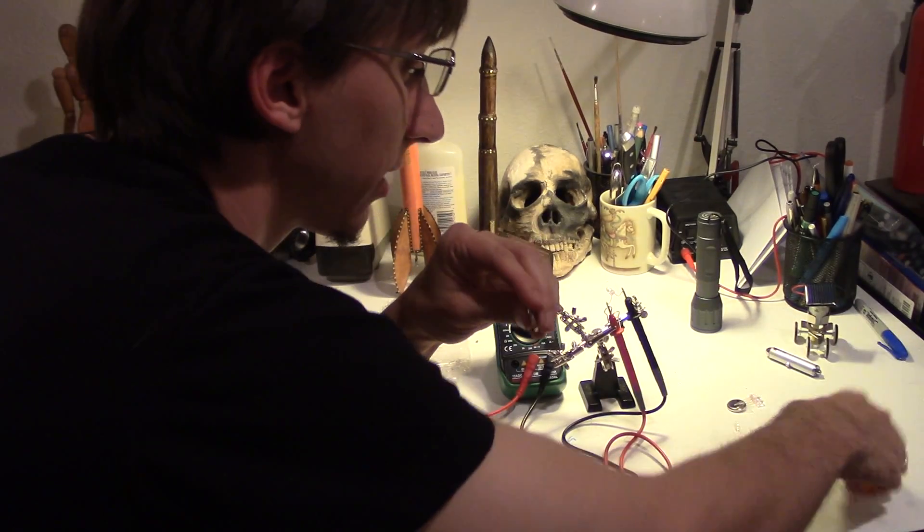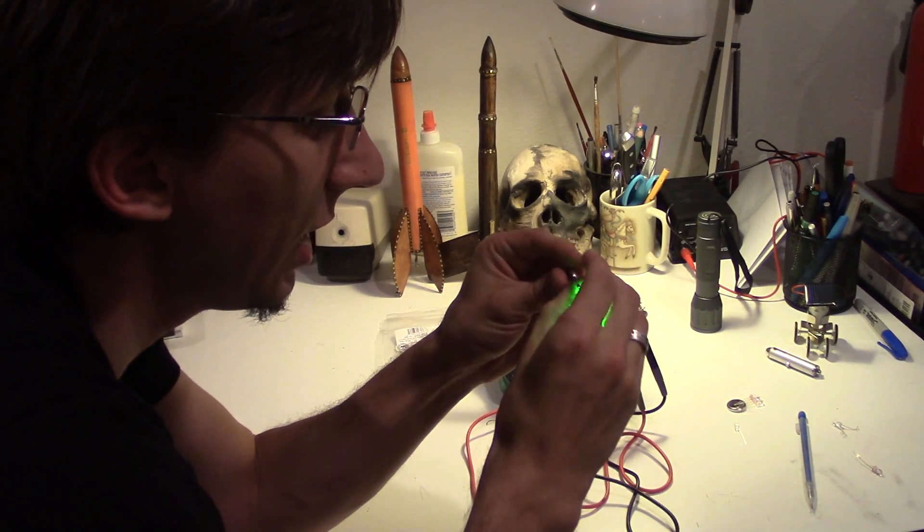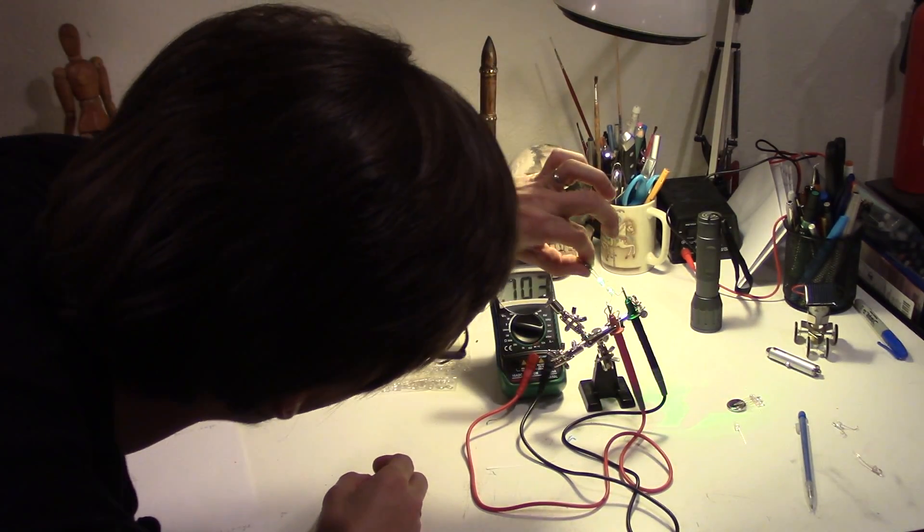Now next interesting thing to do is to take the green one and shine it in the same fashion. Again you get a pretty big voltage. Nothing too surprising there.